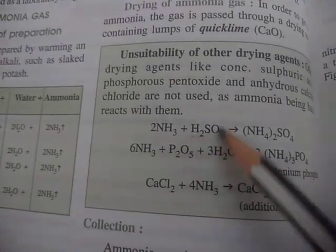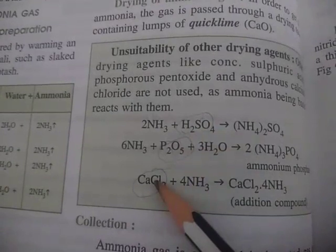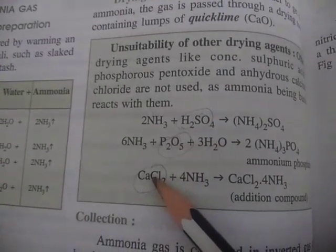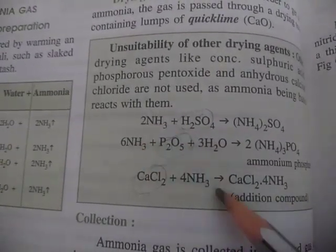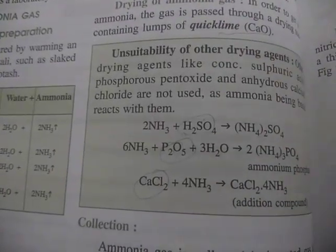We were not using H2SO4, P2O5, or CaCl2 as drying agents because they will react with ammonia gas. But CaO, quicklime, does not react with ammonia gas.